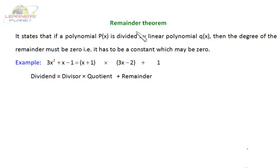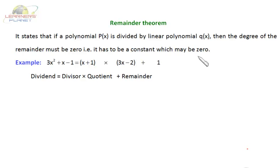Let's discuss the remainder theorem. It states that if a polynomial p(x) is divided by a linear polynomial q(x), then the degree of the remainder must be 0 — that means it has to be a constant, and this constant may be zero. For example: 3x² + x - 1 can be written as (x + 1)(3x - 2) + 1, where 1 is the remainder.